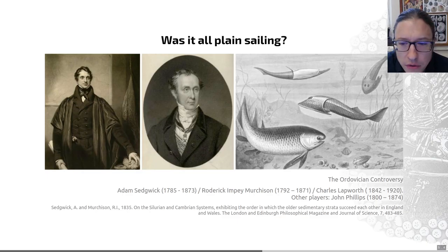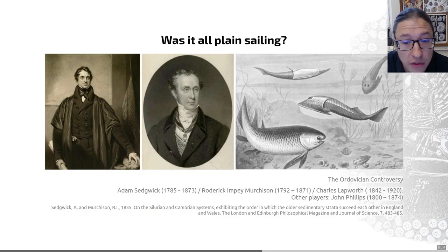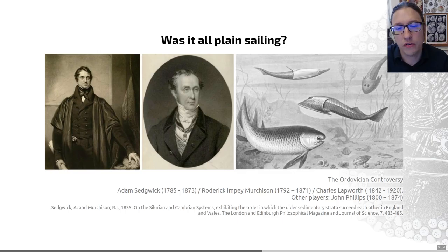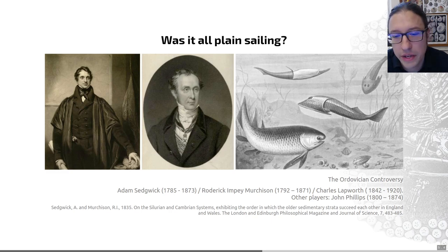This happened a lot. Murchison had other run-ins with famous geologists, such as a gentleman called de la Beche, regarding the Devonian and the Carboniferous. So it was a time period where we were building the geological column, but people were arguing with each other an awful lot. And often, reading about it, I feel it was driven a lot by egos.